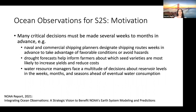For instance, for naval and commercial shipping, we want to be able to design the shipping routes weeks in advance to take advantage of favorable conditions and avoid hazards. For drought forecasts, it's important for farmers to know in advance about the forecast so as to make the best decision in terms of which seed variety to use. Finally, one last example: water resource management. The decisions about reservoir levels have to be made weeks, months, and seasons in advance of the actual usage of the water.